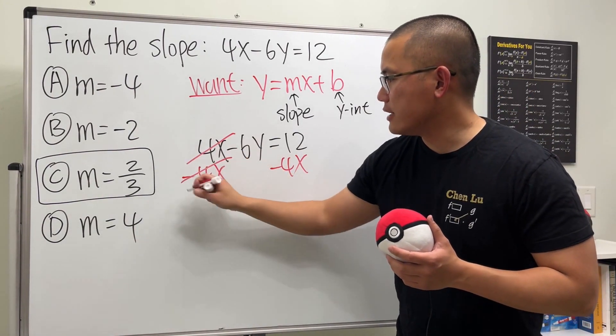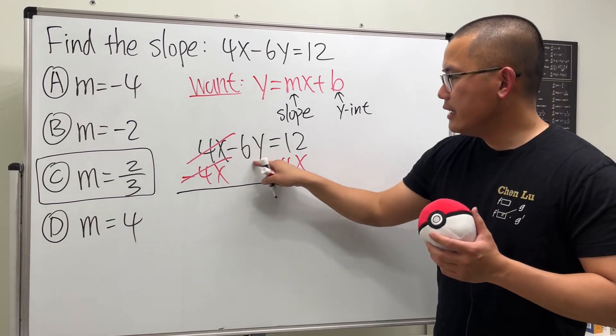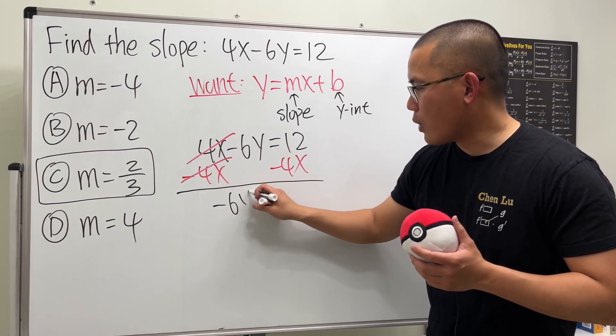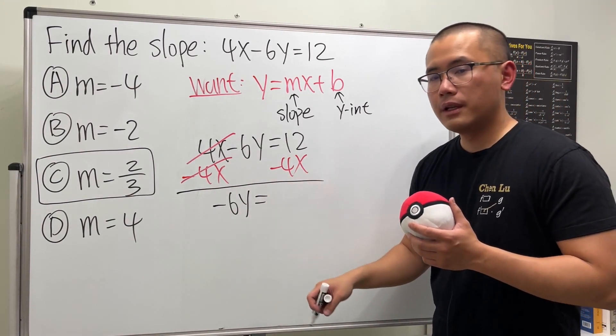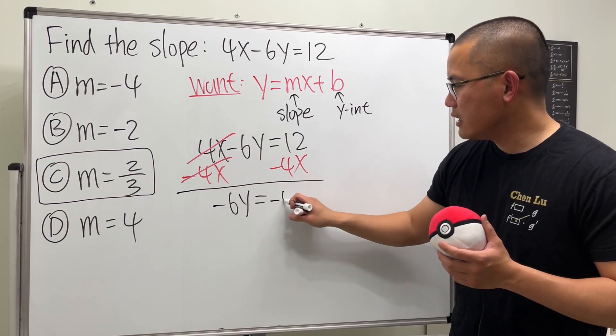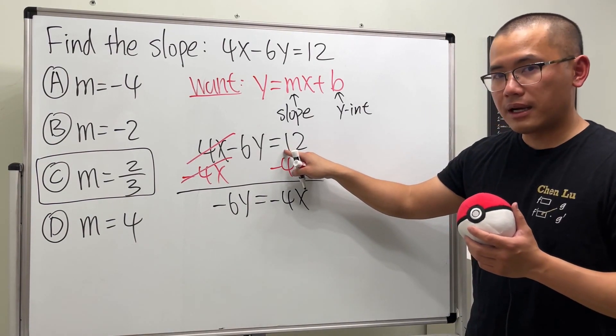So that this and that can cancel, and then we will have this right here, which is negative 6y. And that's equal to - let's write this down first - we have negative 4x, and then this is a positive 12, so we will add 12 here. That's what we have.